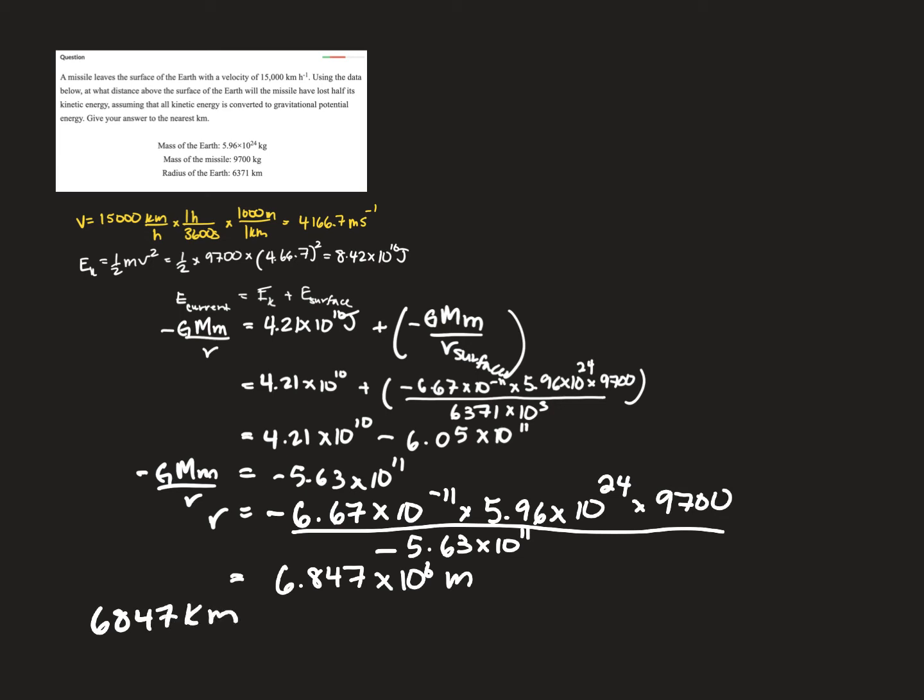But that is the radius, so that's the distance from the center of the Earth. And the question actually wants the value of how far from the Earth's surface. So that means I'm going to have to take my 6,847 kilometers and subtract the radius of the Earth. And since that was given in kilometers, that's why I did my conversion already. And I get 476 kilometers.